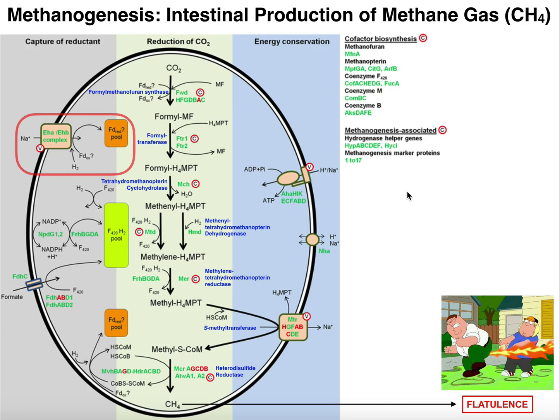I'm not showing any structures here because it's going to get fairly complicated, but I will say that in the middle of this pathway it's going to very greatly resemble tetrahydrofolate metabolism in humans. In fact, the actual cofactor that's used — which is methanopterin, or tetrahydromethanopterin — is structurally very similar to tetrahydrofolate and is actually going to have some similar functions, similar binding, and also reactions.